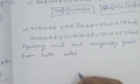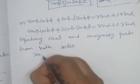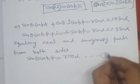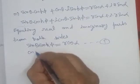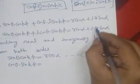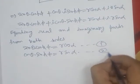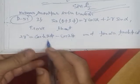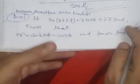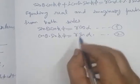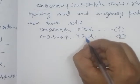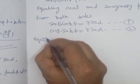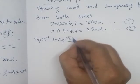So equation (1) is: sin θ·cosh φ = r·cos α, and equation (2) is: cos θ·sinh φ = r·sin α. Since we need to find r in terms of φ and θ and eliminate α, we will square both equations and add them, using sin²α + cos²α = 1 to eliminate α.